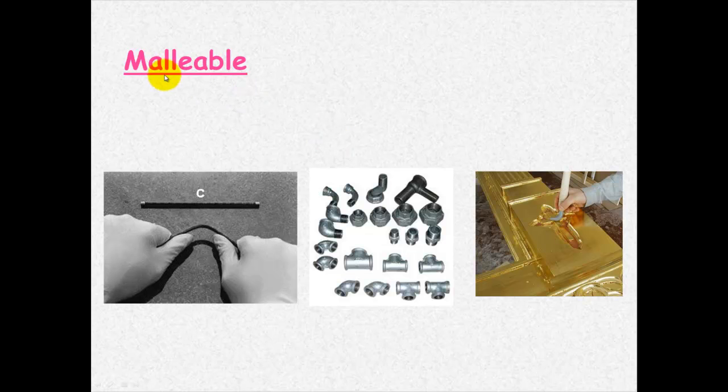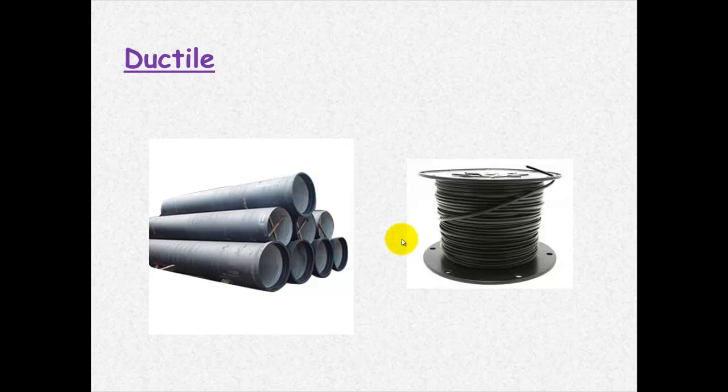They're also malleable which means that they can be forcibly bent or hammered into shape. You can see here someone's bending it. Sometimes it requires a little bit more hard work but they can be reshaped using force. And they're ductile, and by ductile we're talking about the ability to be drawn out into a wire.